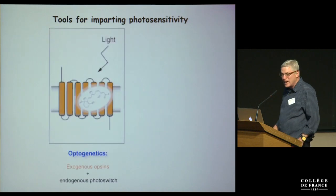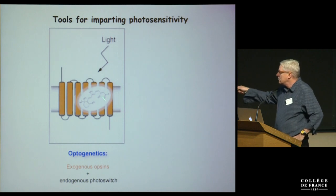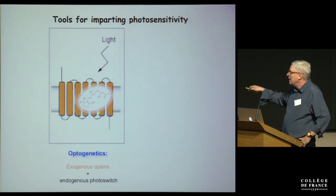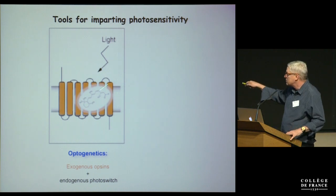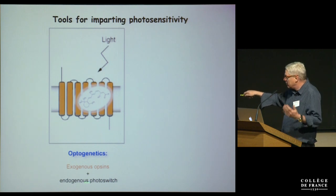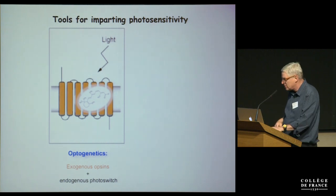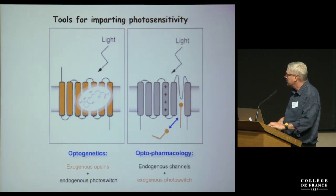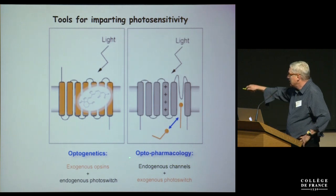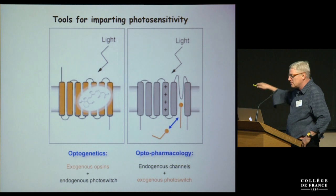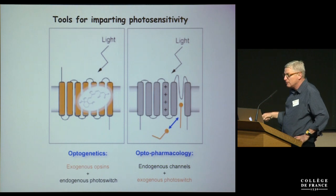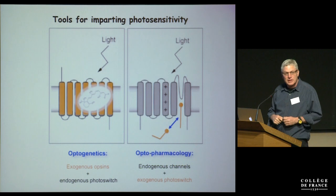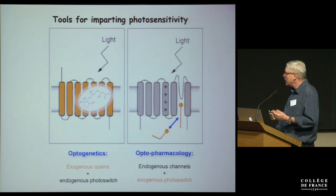We've heard about optogenetics, where you take a gene encoding an opsin and you express it exogenously in a neuron—a retinal neuron—and that opsin finds an endogenous chromophore, 11-cis retinal, and we call it a photo switch, and the combination gives you light-sensitive channels. We're doing sort of the opposite, which is taking advantage of endogenous channels and building synthetic photoisomerizable compounds that act as photo switches on voltage-gated ion channels to impart light sensitivity on the intrinsic membrane properties of neurons.